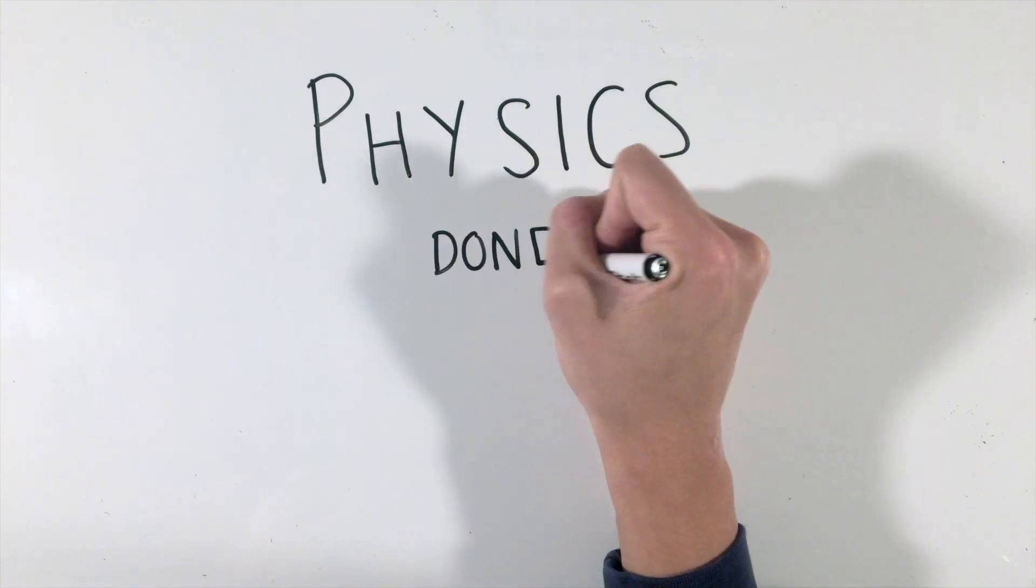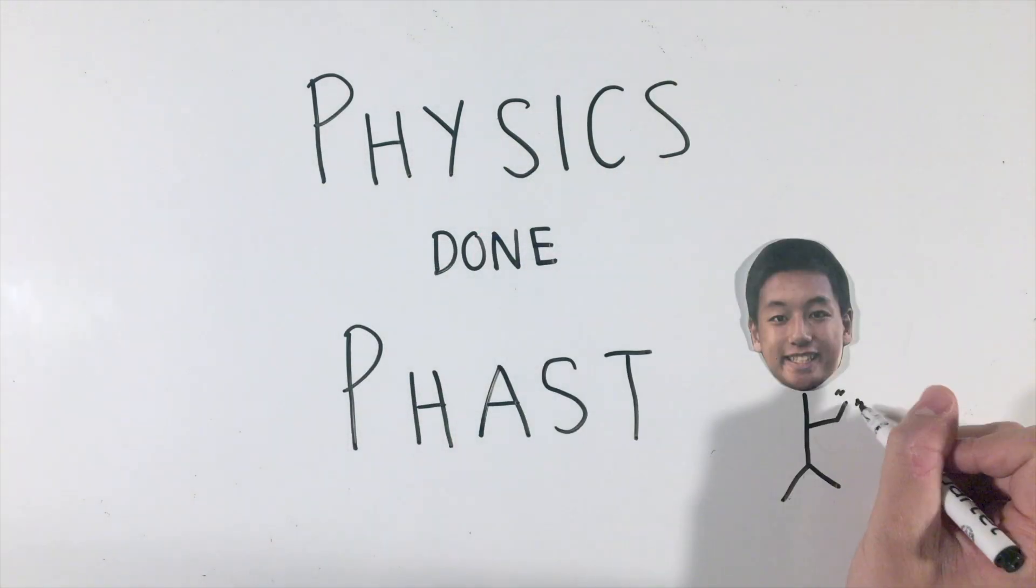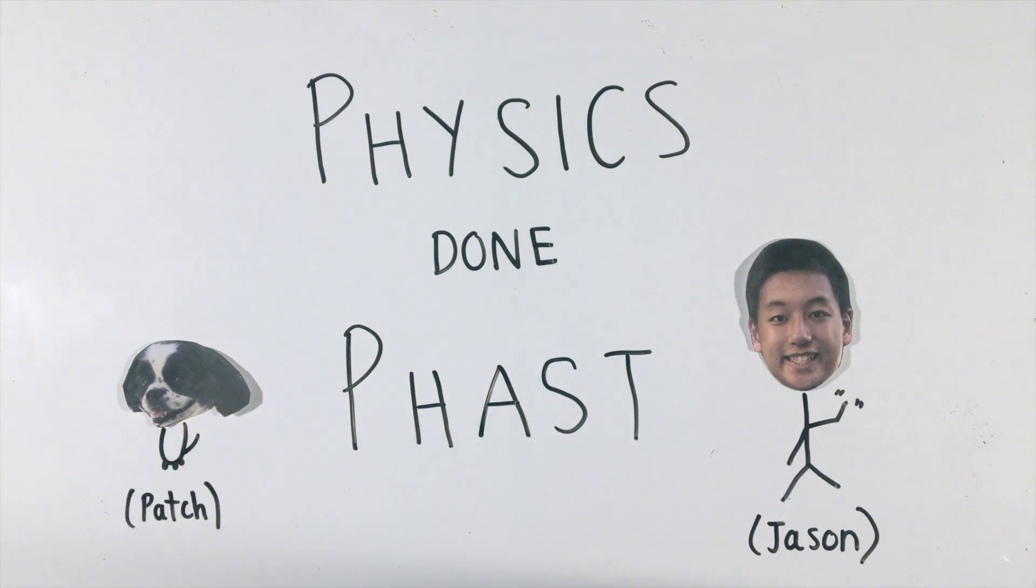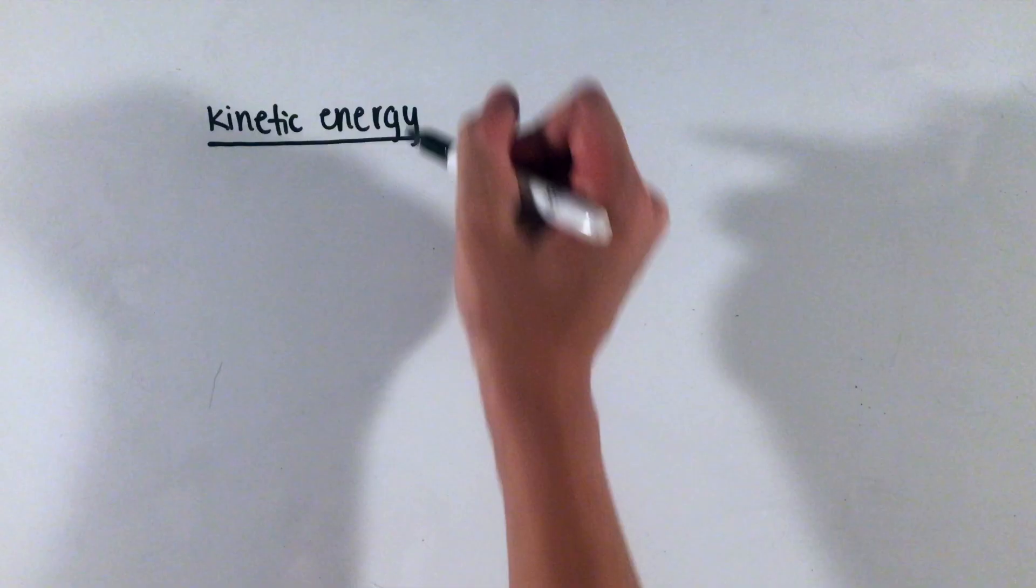While we've learned the basics of work, energy, and power in AP Physics 1, how do these concepts function in AP Physics C problems? Like AP Physics 1, AP Physics C will still be dealing with the same types of energies and concepts like work and the conservation of energy.